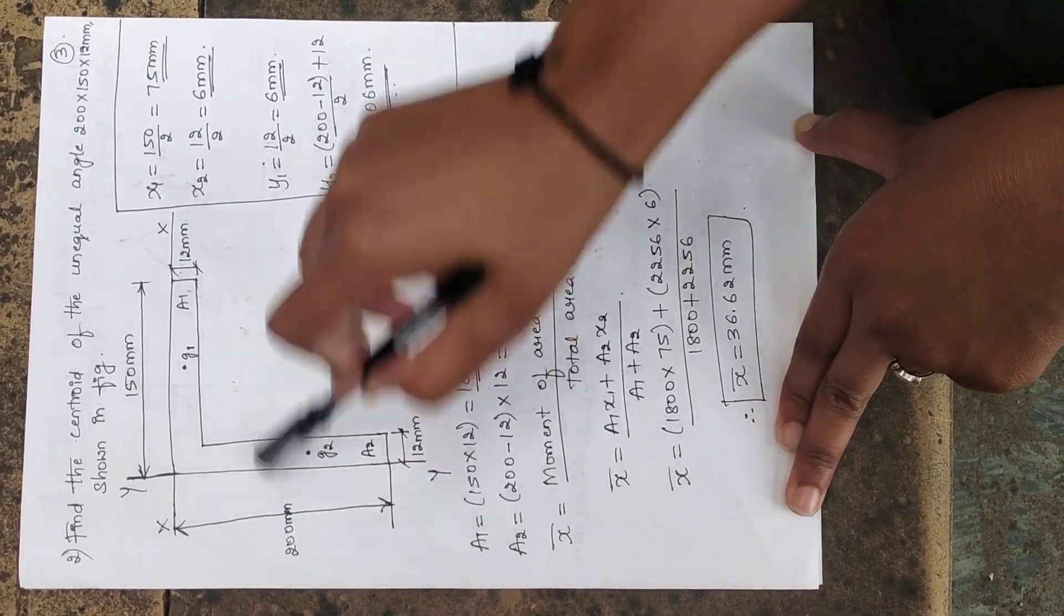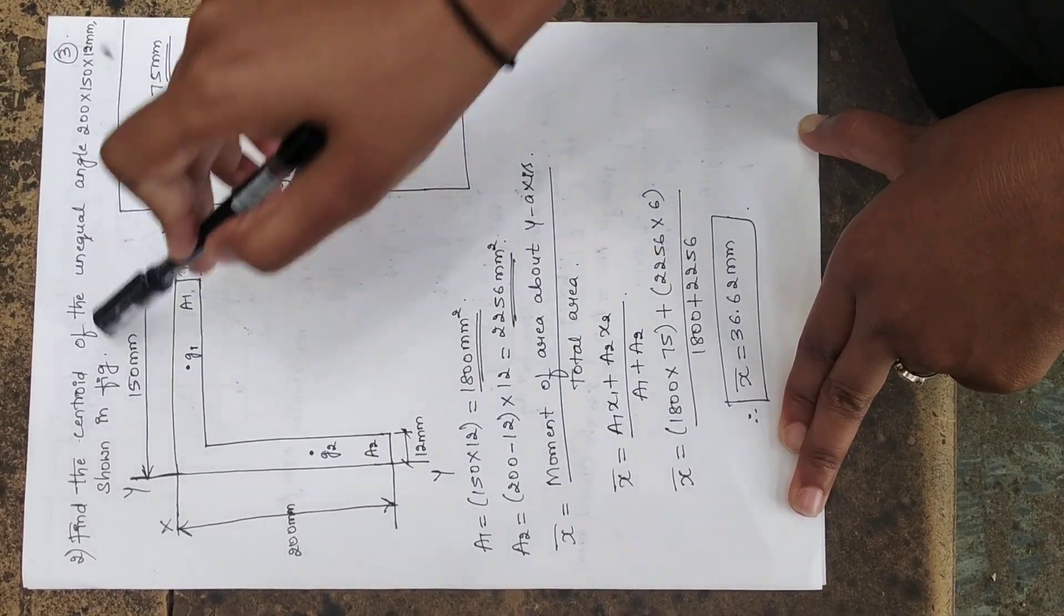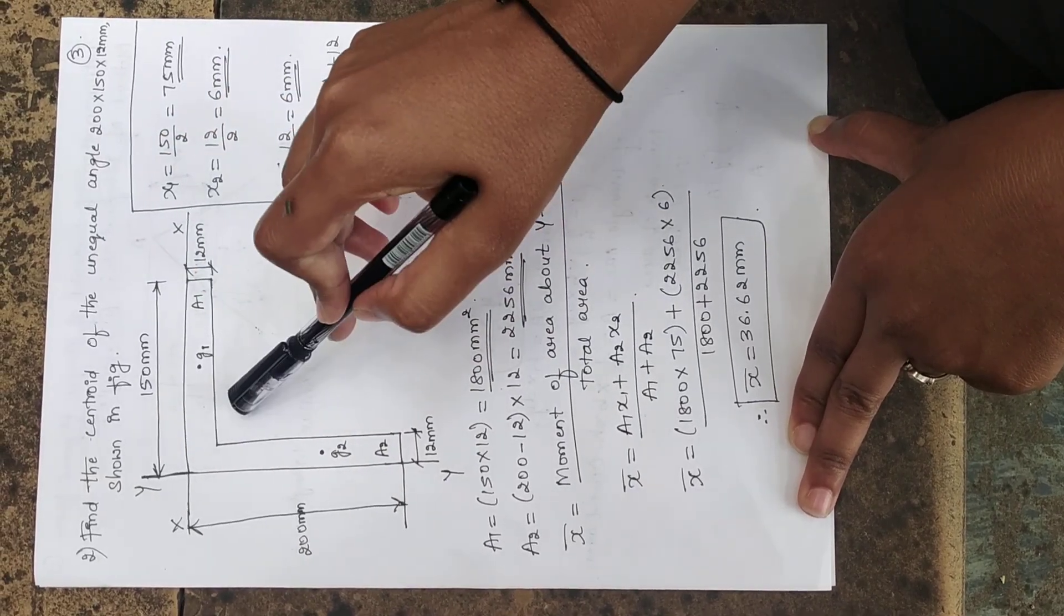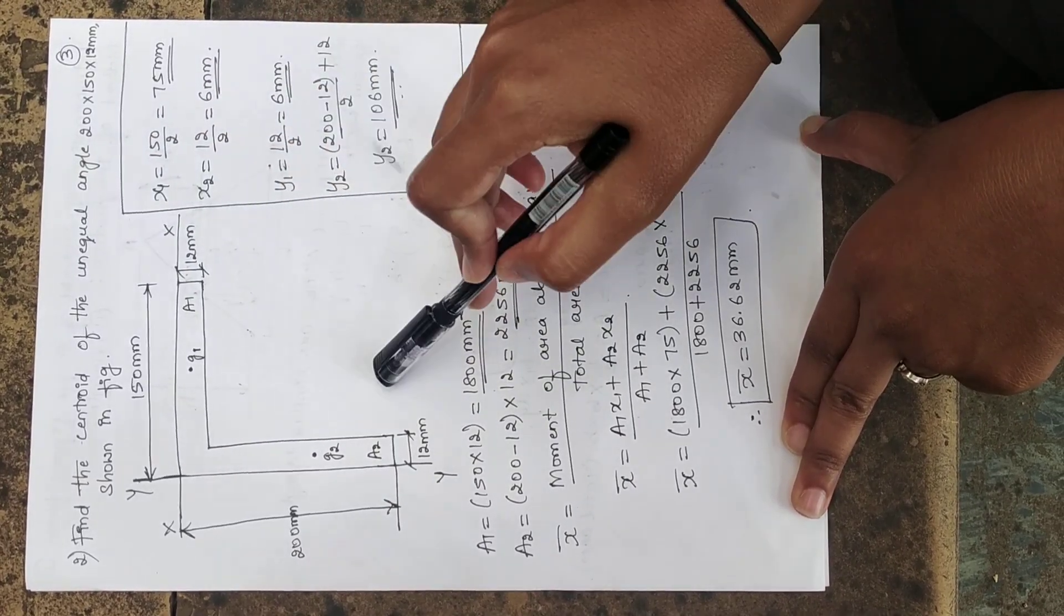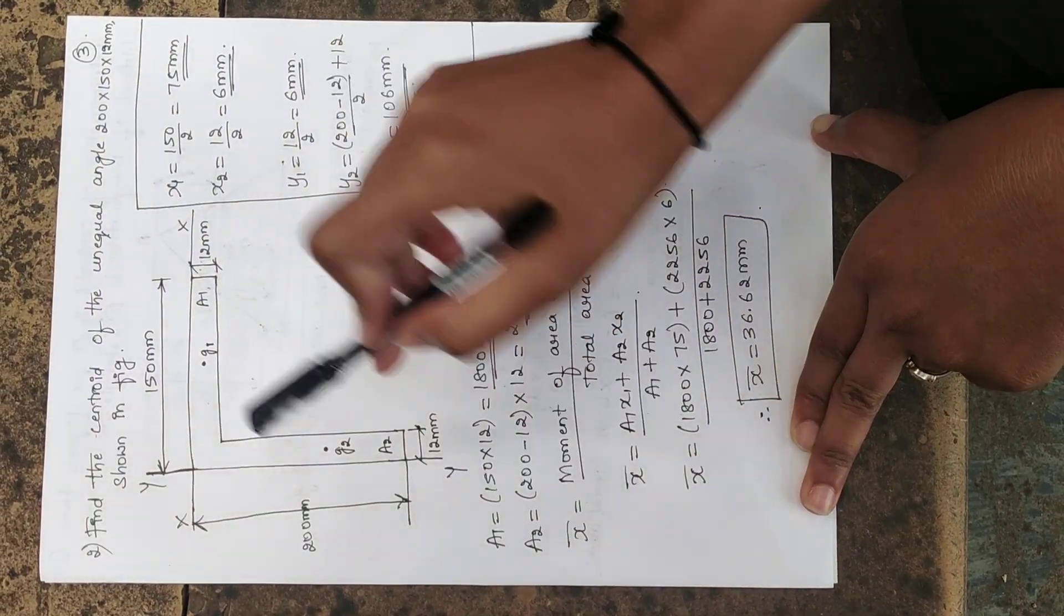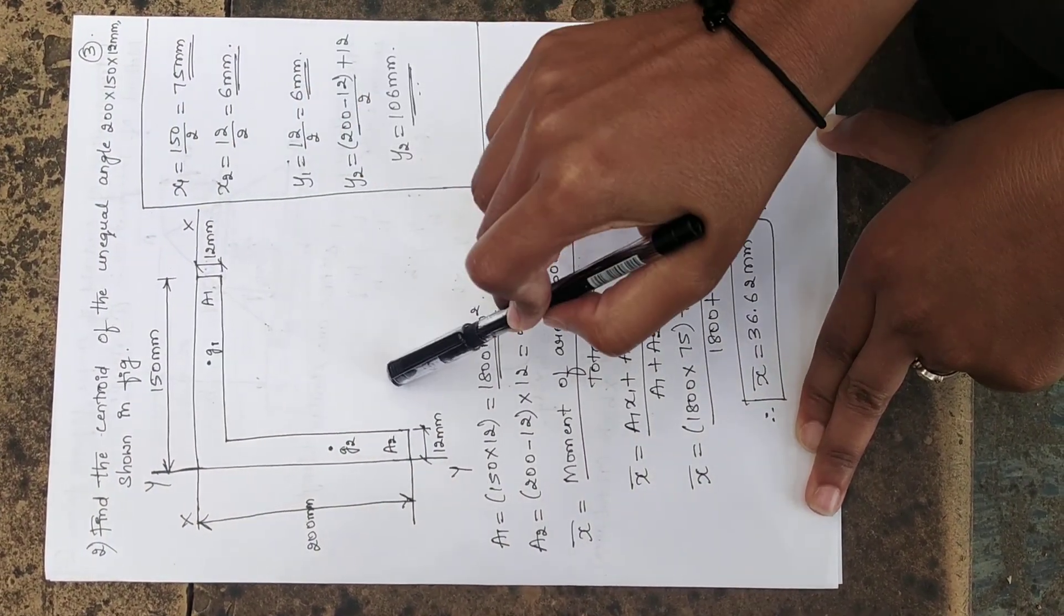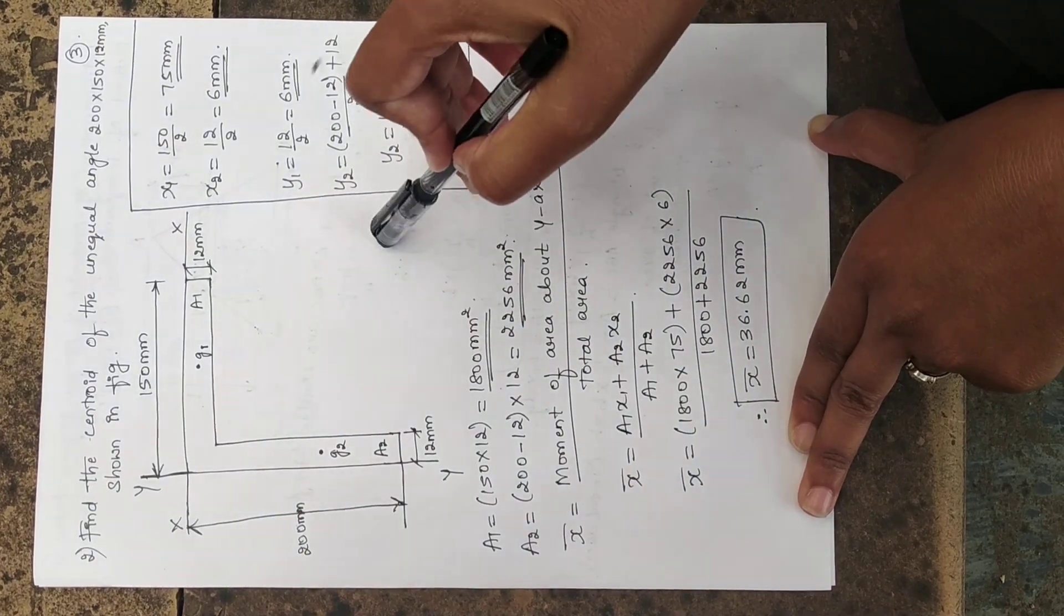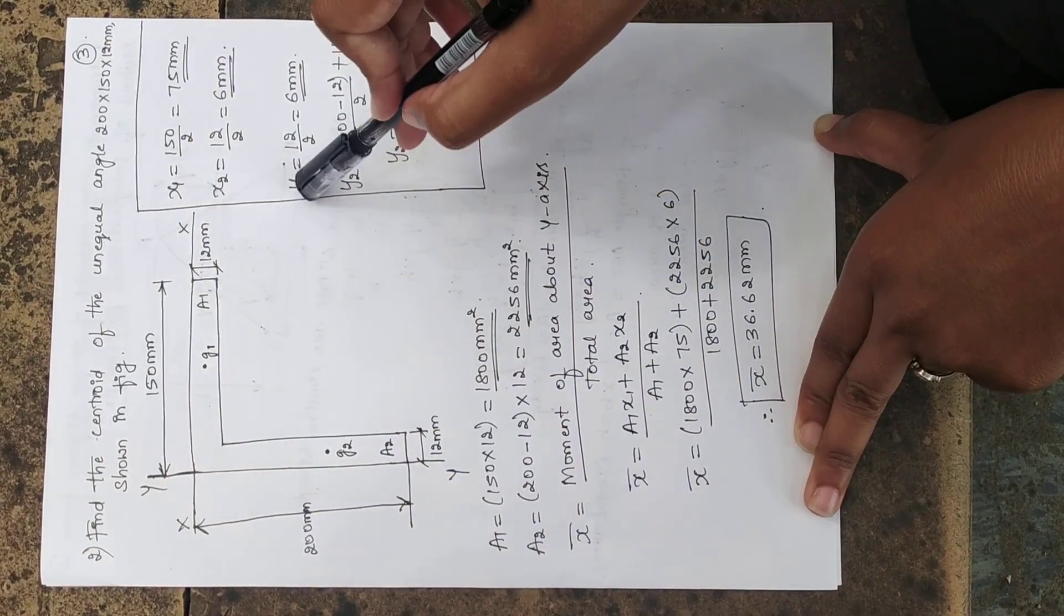Likewise, if we cut along x-axis, whatever the thing which you are seeing on the upside of the axis, the same mirror image you have to see on the downside. But again, I am not getting the mirror image of this in the downside. That's why we can also say that the section is unsymmetrical about x-axis.